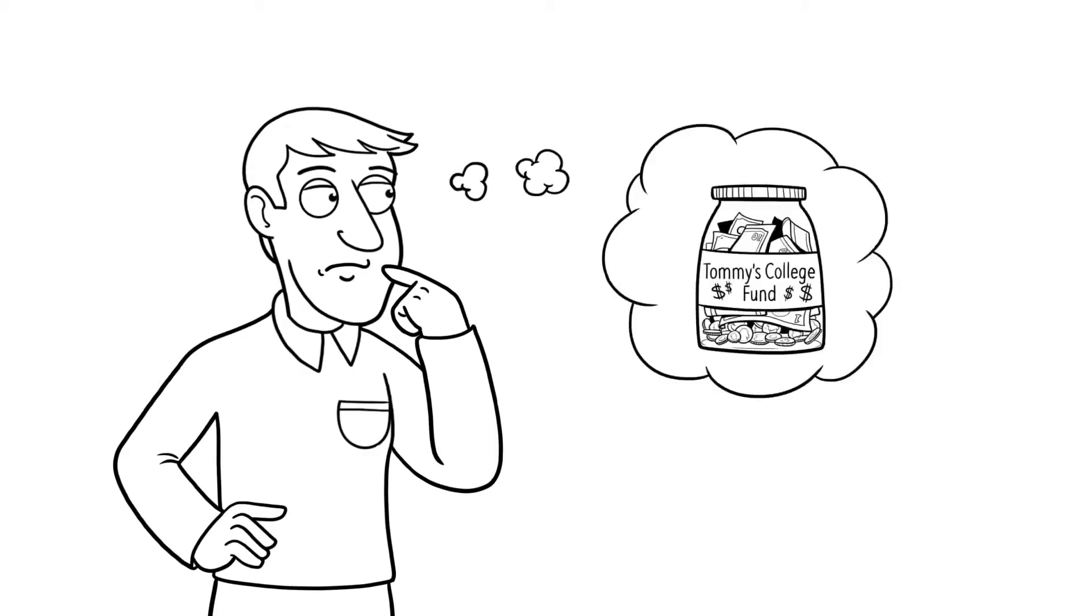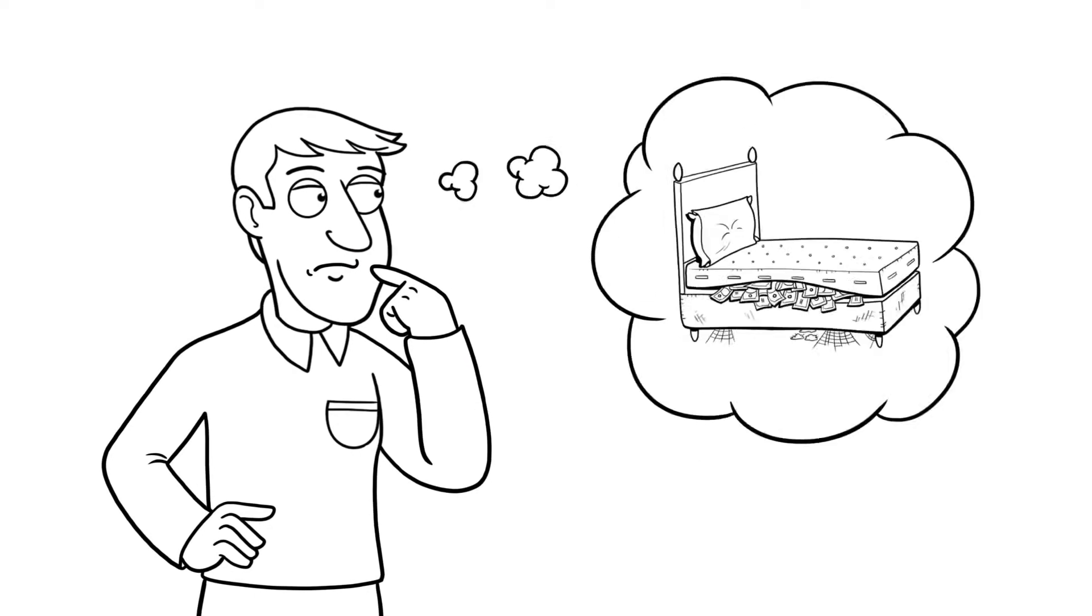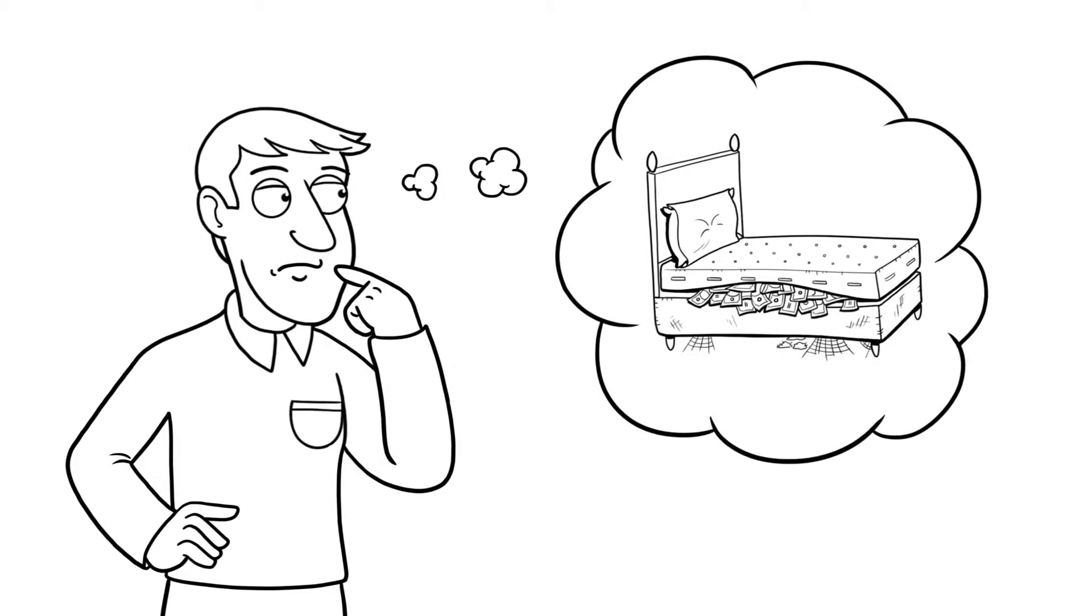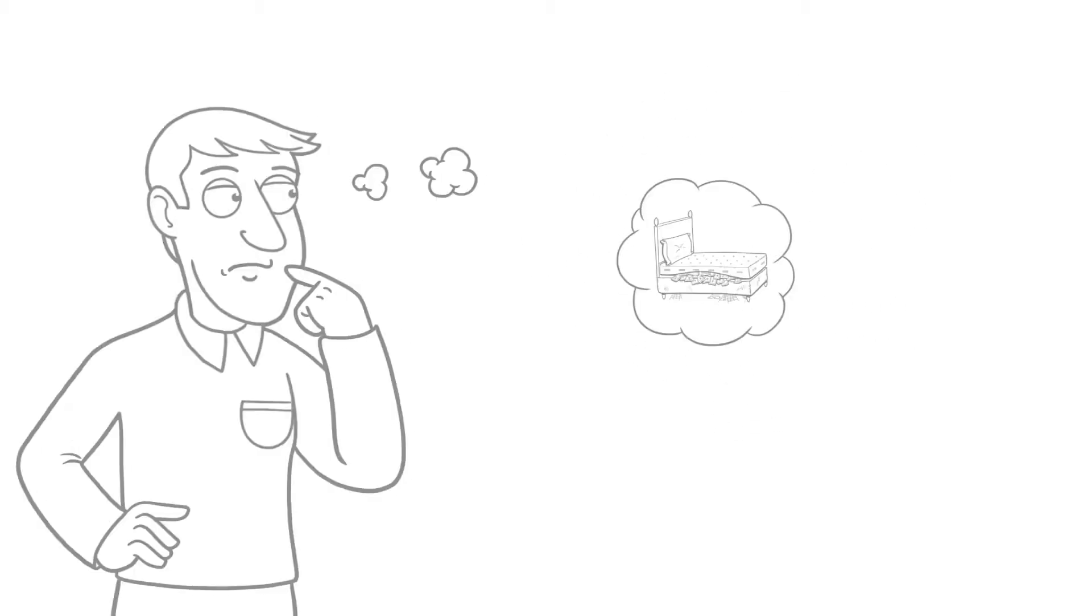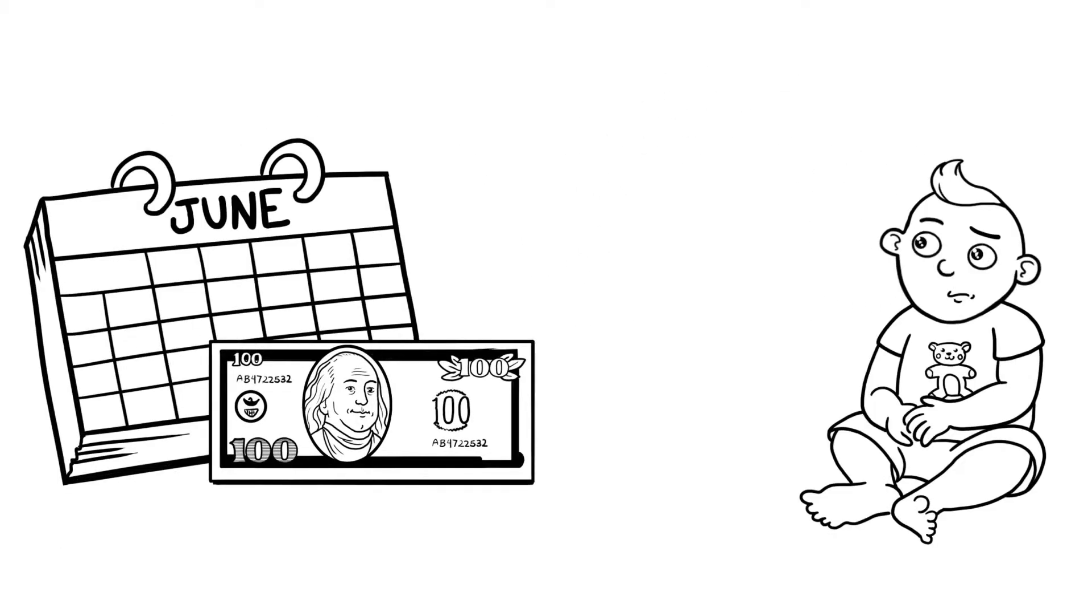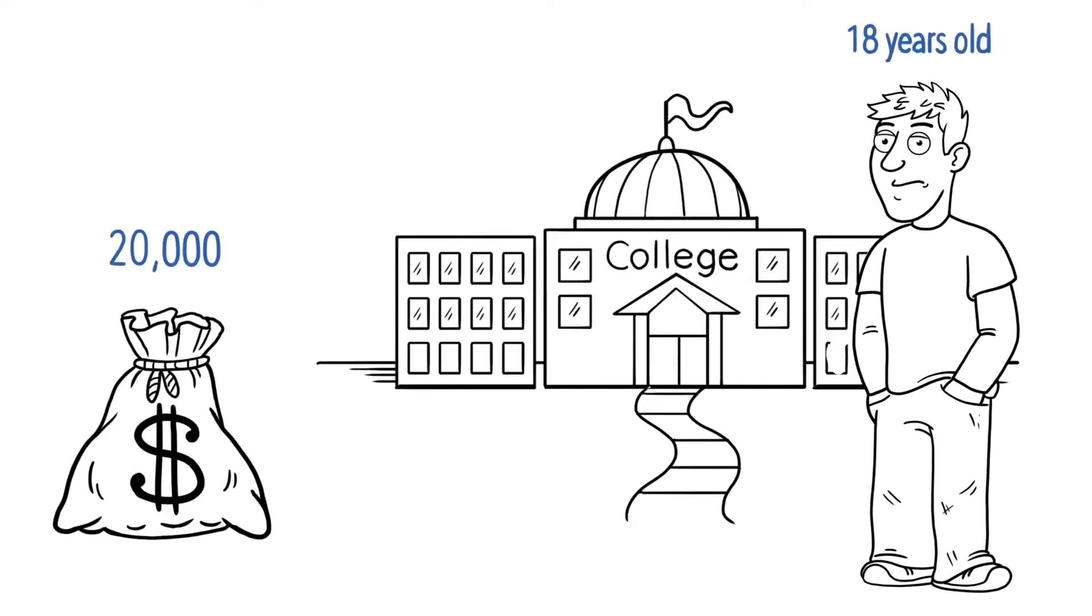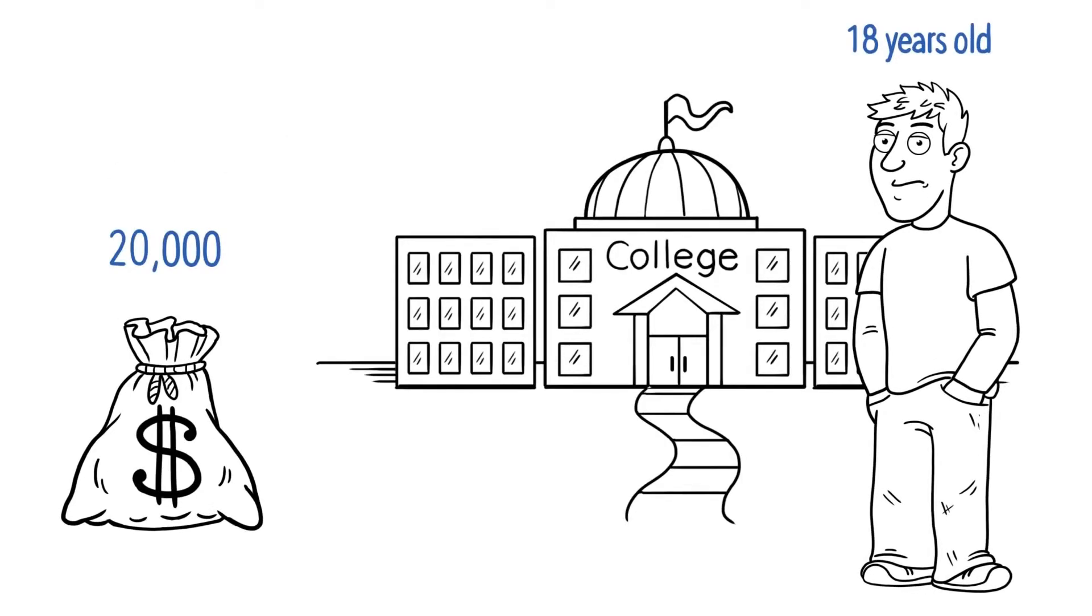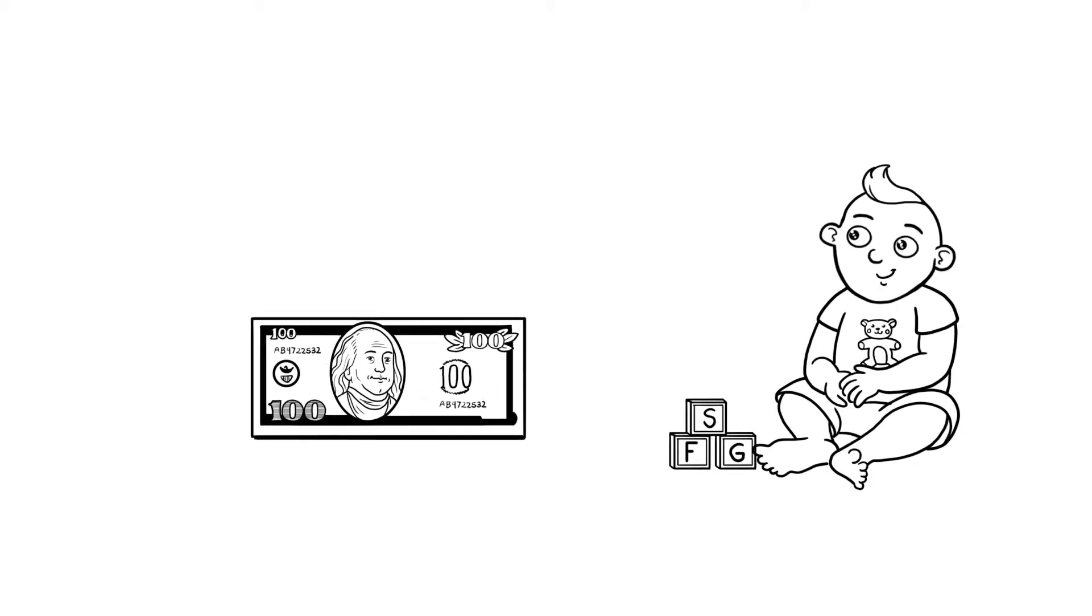Now you might ask, what if I just saved money for my child instead? Well, you could put that money under a mattress, but it wouldn't ever grow in value. If you saved $100 a month for your child every month without interest, then they'd have a little over $20,000 by the time they reached 18.